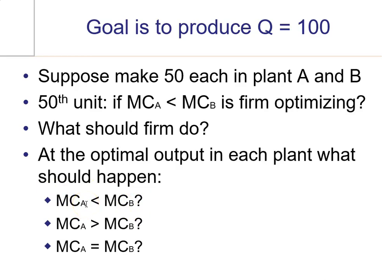...the marginal cost in plant A is lower, produce another unit at the A plant and one less at the B plant.